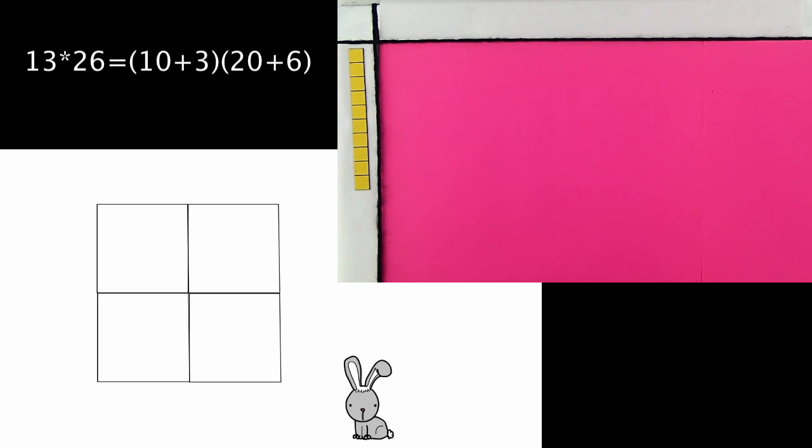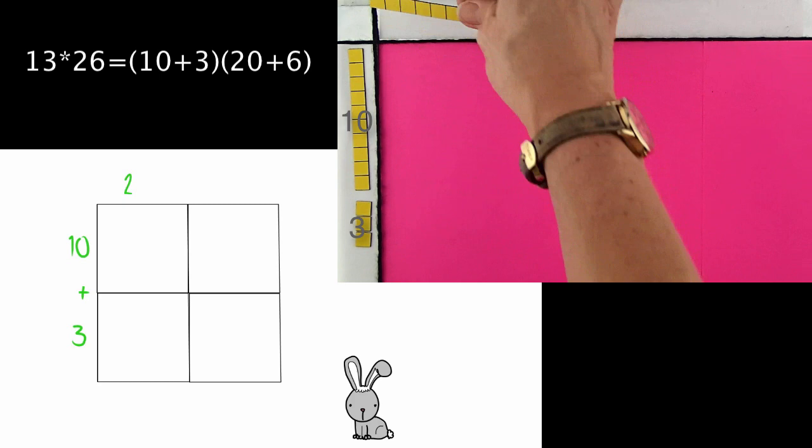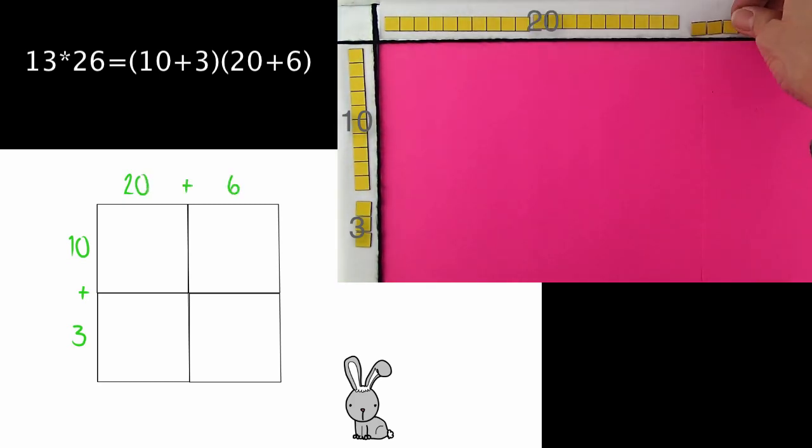Each yellow square represents one unit. On the left, you'll see how the problem is done on paper. So let's begin. 10 plus 3 times 20 plus 6.